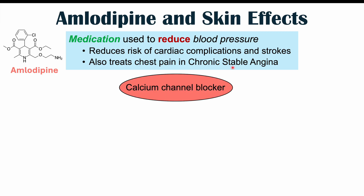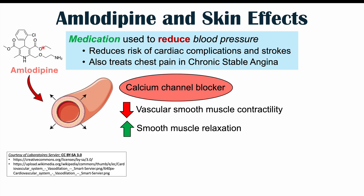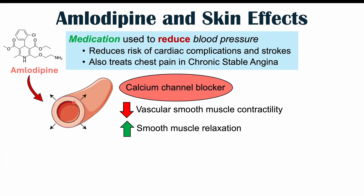Amlodipine is a calcium channel blocker. Its mechanism of action involves decreasing vascular smooth muscle contractility and increasing smooth muscle relaxation. All of these allow for vasodilation — opening up of blood vessels. This is its main mechanism of action to help reduce blood pressure. Think of it as increasing the diameter of blood vessels to reduce the pressure within them.